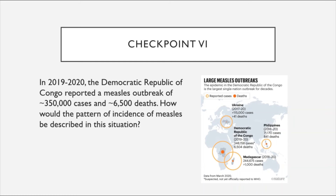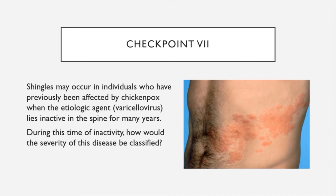Checkpoints on classification schemes: In 2019 and 2020, the Democratic Republic of Congo reported a measles outbreak of 350,000 cases and 6,500 deaths. How would the pattern of incidence of measles be described in this situation? Next: shingles may occur in individuals previously affected by chickenpox when the varicella virus lies inactive in the spine for many years. During this time of inactivity, how would you classify the severity of the disease?